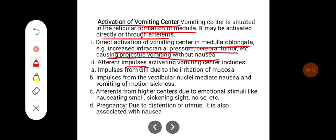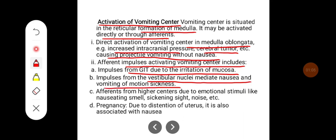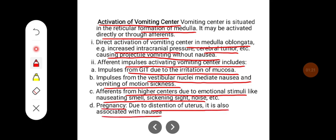Afferent impulses activating the vomiting center include impulses from the GIT due to irritation of the mucosa, and impulses from vestibular nuclei which mediate nausea and vomiting in motion sickness. Afferents from higher centers due to emotional stimuli like nauseating smell, sickening sight, noise, etc. also activate it. Additionally, pregnancy due to distension of the uterus is associated with nausea and vomiting.